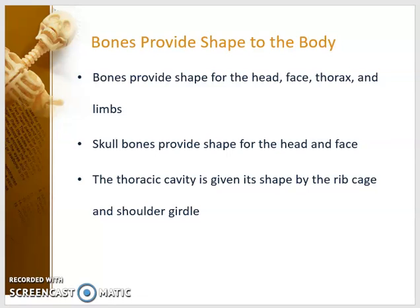Bones provide shape to the body. Bones provide shape for the head, face, thorax, and limbs. Skull bones provide shape for the head and face. The thoracic cavity is given its shape by the ribcage and shoulder girdle.